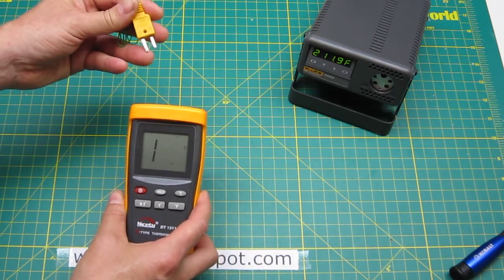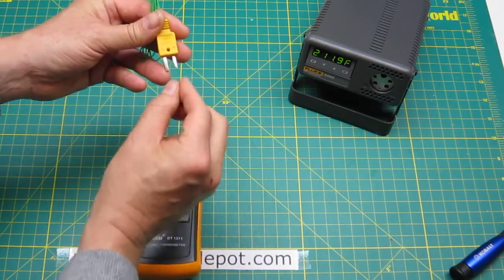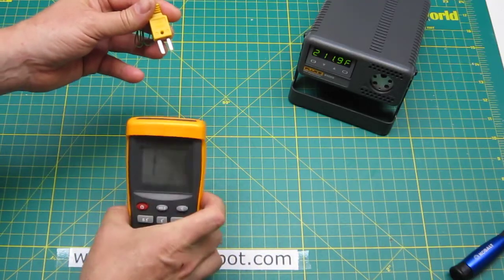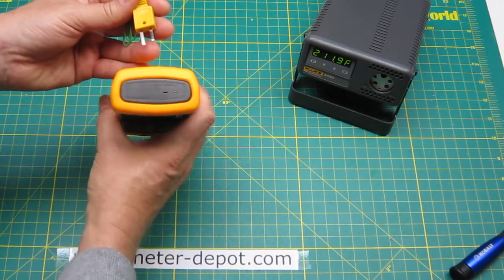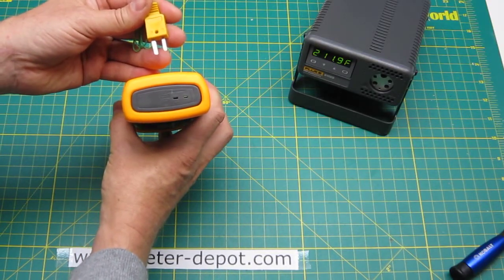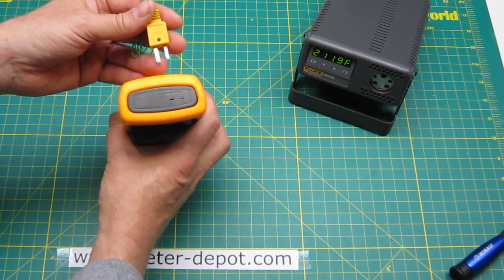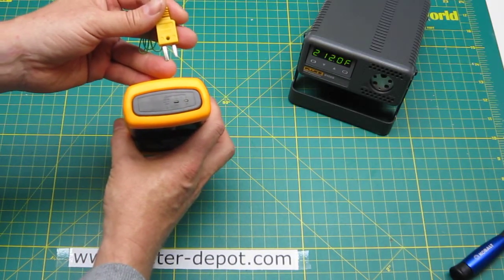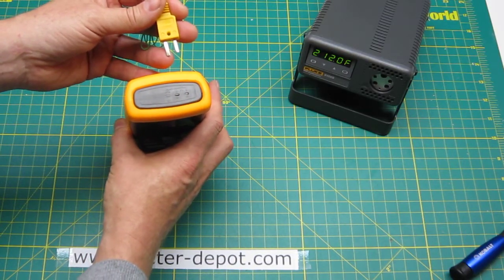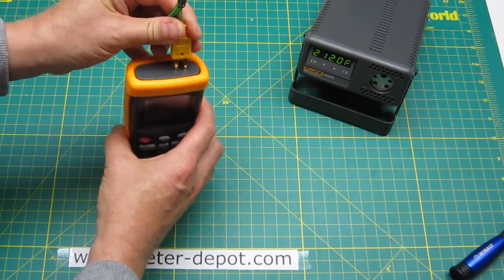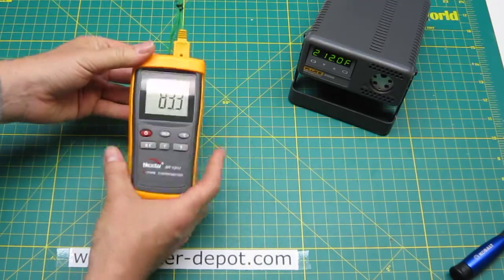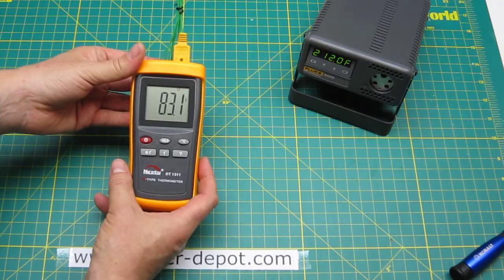If you look at the plug of the thermocouple you will notice you have a narrow blade and a little bit of wider blade and you need to be very careful to insert it correctly at the top. They can be inserted the wrong way. The smaller blade is the plus, the wider blade is the minus contact. Insert it and the measurement starts immediately.